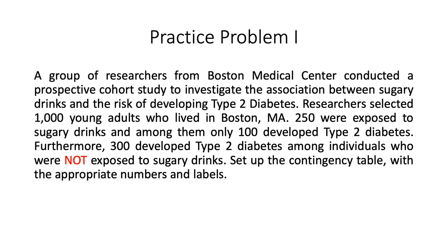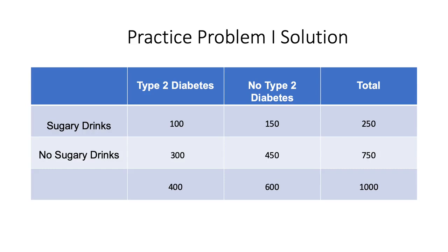Now we have our first practice problem. A group of researchers from Boston Medical Center conducted a prospective cohort study to investigate the association between sugary drinks and the risk of developing type 2 diabetes. Researchers selected 1,000 young adults from Boston, Massachusetts. 250 were exposed to sugary drinks and among them only 100 developed type 2 diabetes. Furthermore, 300 developed type 2 diabetes among individuals not exposed to sugary drinks. The task is to set up the contingency table with the appropriate numbers and labels. The table is organized by disease status — type 2 diabetes — and exposure to sugary drinks.